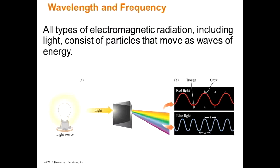These waves are passing through a fixed point. At this fixed point, you have more of them hitting you — each hit is like a photon from Guardians of the Galaxy. Here you're getting hit twice; here you're only getting hit once. So shorter wavelengths are higher frequency, and long wavelengths are lower frequency. Higher frequency tends to be more biologically damaging.